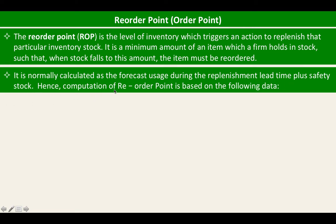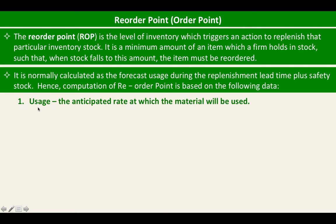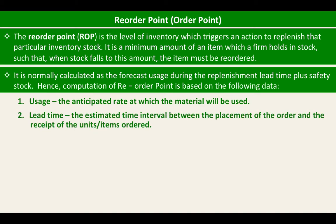The computation of reorder point is based on the following data. First is usage: the anticipated rate at which the material will be used — for example, how many bicycles are you selling per day. Second is lead time: the estimated time interval between the placement of the order and the receipt of the units or items ordered. This is the lag time period — for example, you ordered today, how many days it will take the supplier before delivery.